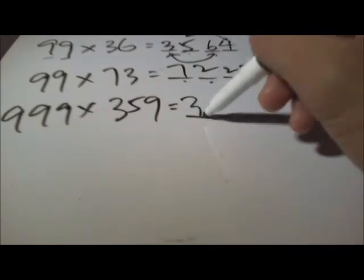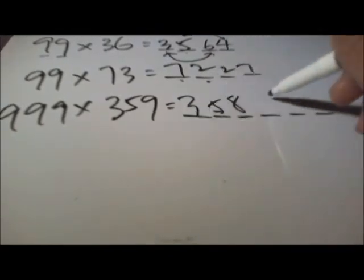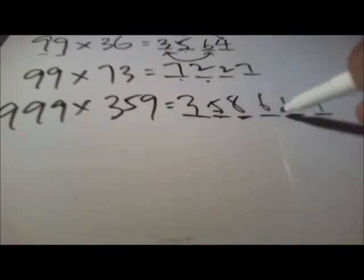359 minus 1, you got 358. So 6, 4, and 1. 3 plus 6 is 9, 5 plus 4 is 9, 8 plus 1 is 9.